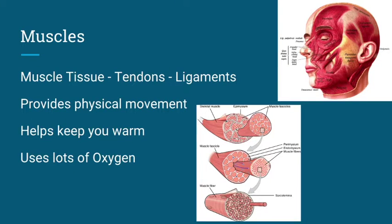Another body system is your muscles. They are made up of muscle tissue, tendons, and ligaments. All of these things work together to provide movement — the only reason you can move is because of muscles. But another function of muscles is to help keep you warm. As your muscles use energy, they produce heat. This is why you shiver when you're cold, because shivering produces heat so you can stay warm. But muscles use up a lot of oxygen, so you must have other body parts that work to provide your muscles with oxygen.